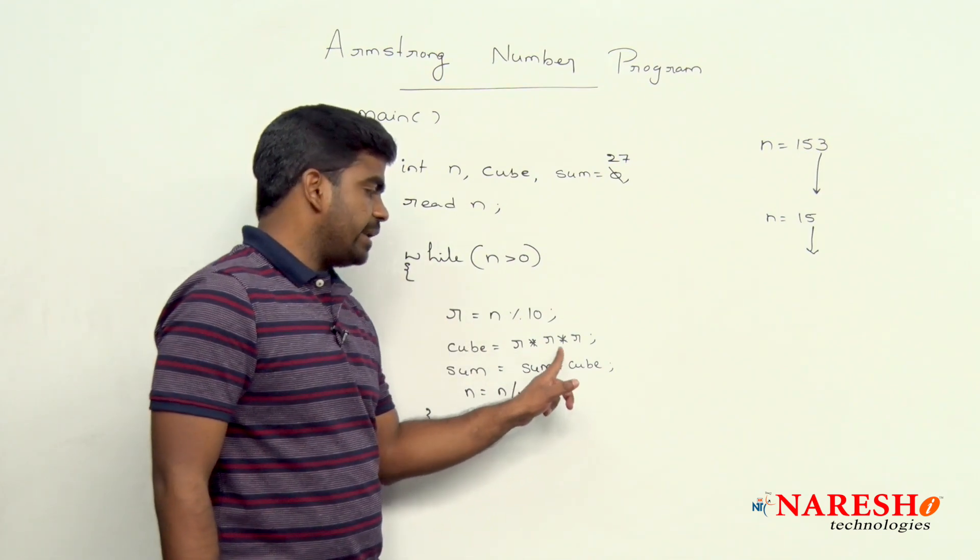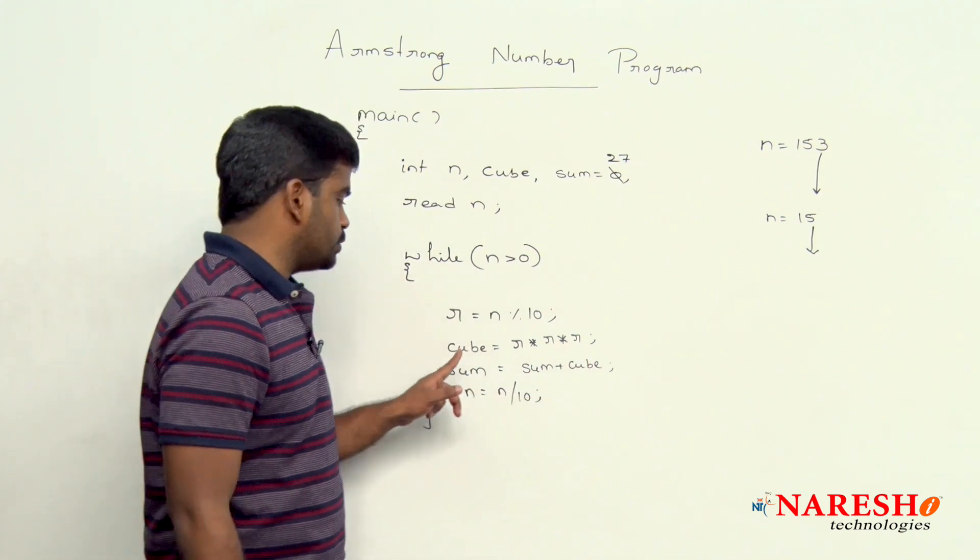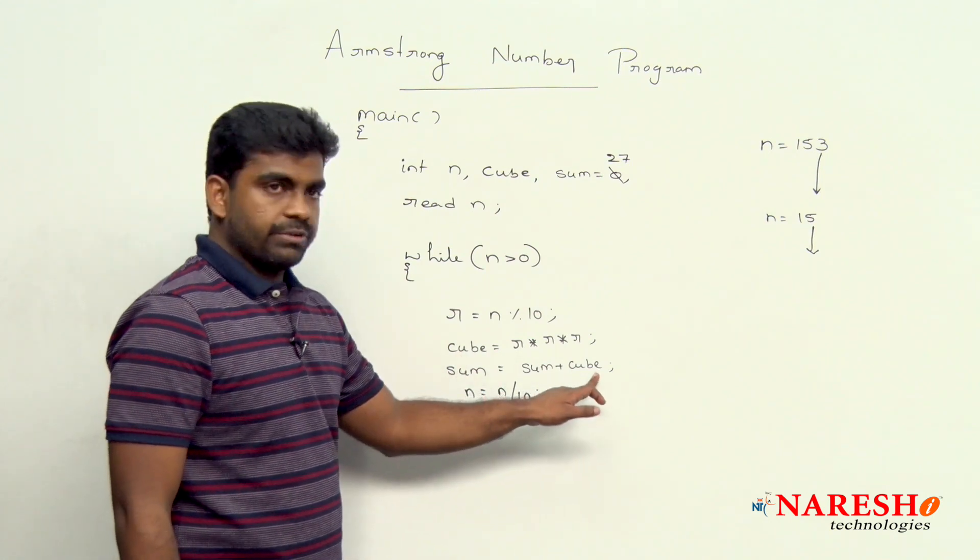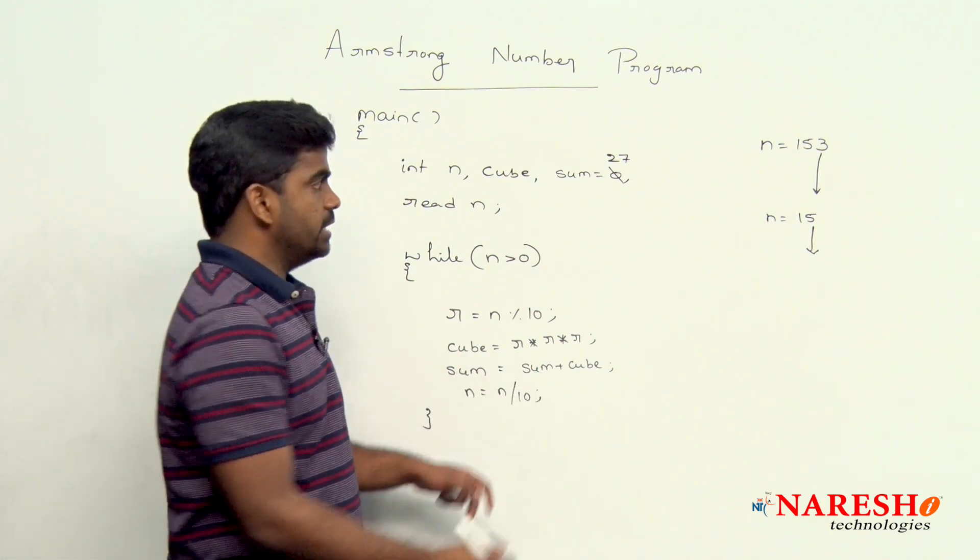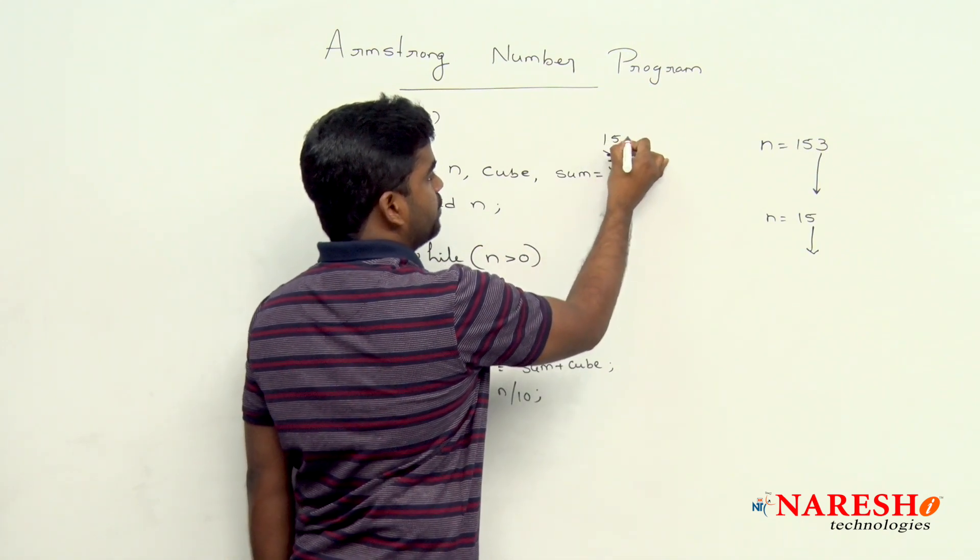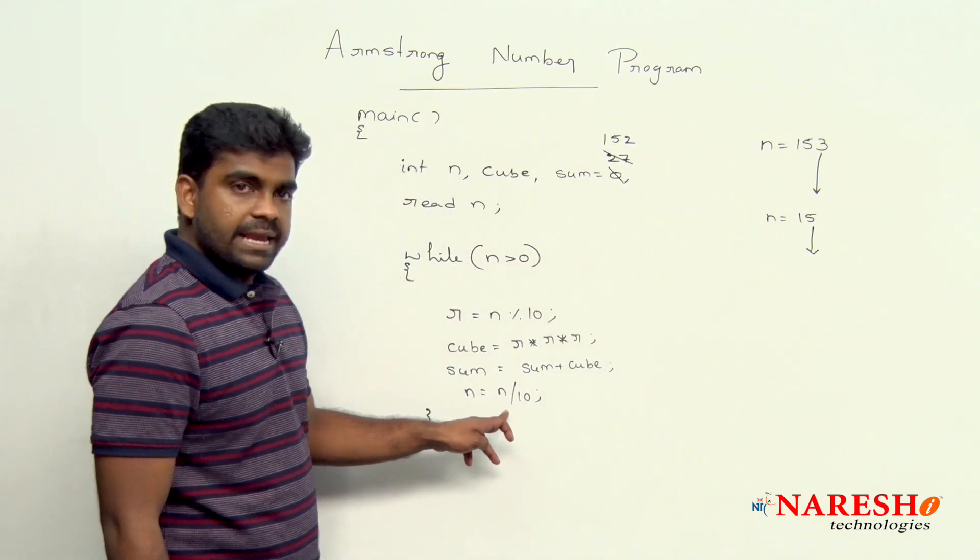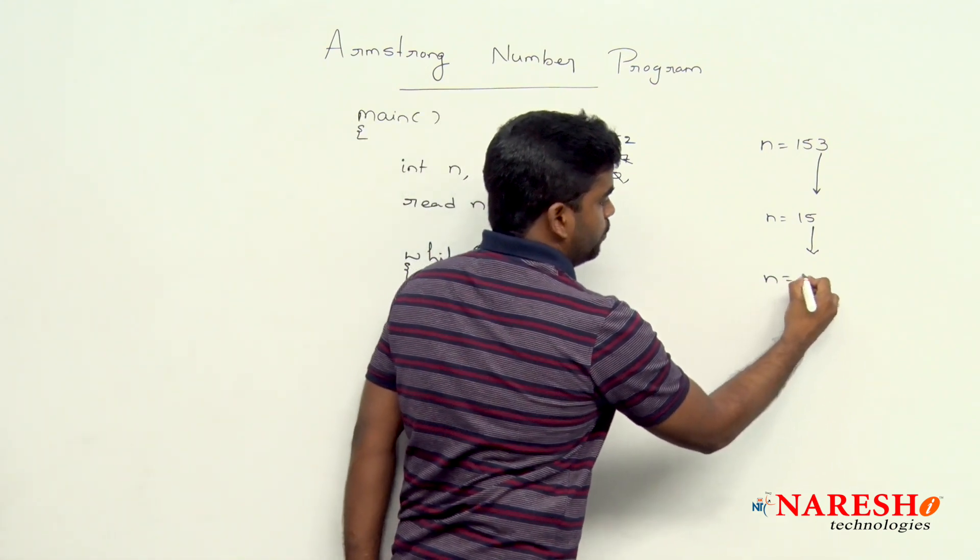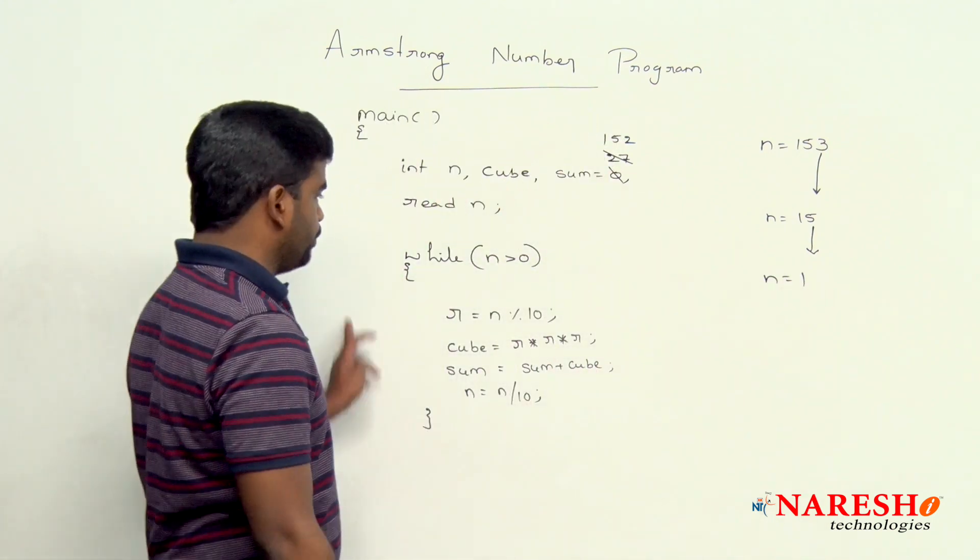5 into 5 into 5, 125 will go and store into that cube. That 125 we are adding to this sum. 125 plus 27, value is 152. And n by 10, n value become 1. Again loop will repeat.